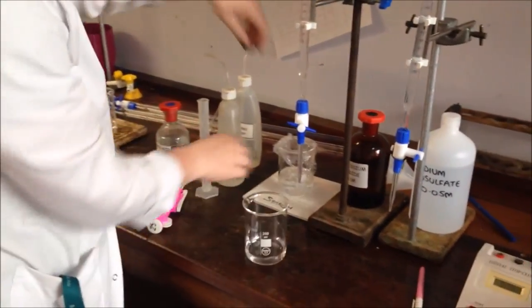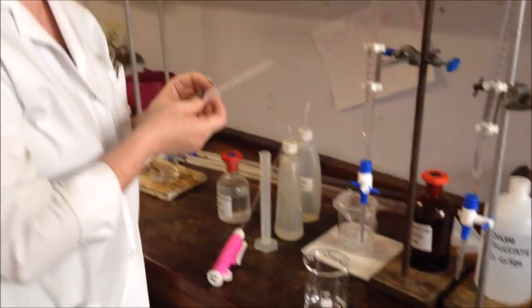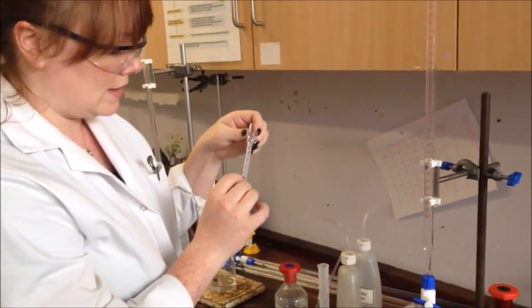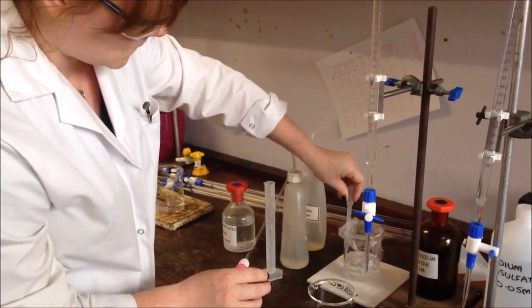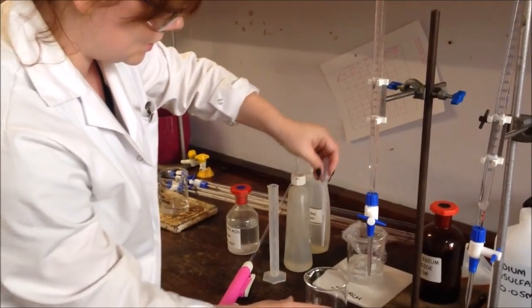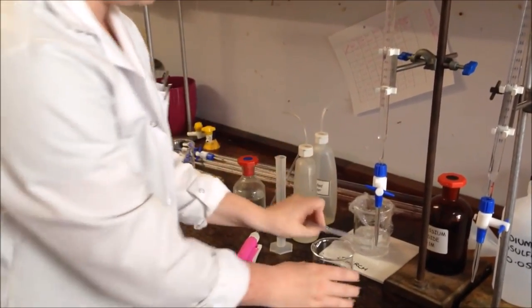I now need to add 1cm³ of starch, and I'm just going to be doing that with a little dropping pipette. You'll see that I have 0.5 and 1 on the side here, so that's up to 1cm³. That can go in there now.